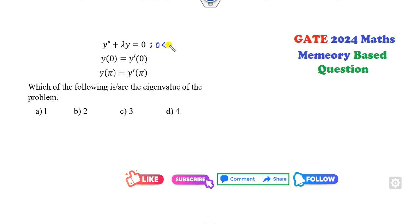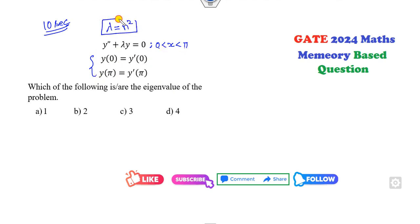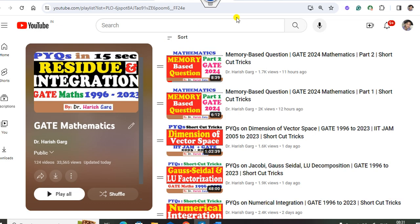The first question is given here. If you remember or have watched my previous PY question series, you can solve this question within 10 seconds. The condition I have given: whenever boundary conditions are given, the value of lambda must be n² — where n is a natural number. The first option is the correct answer. If you are new to my channel, I will explain the shortcut trick.